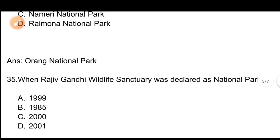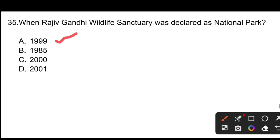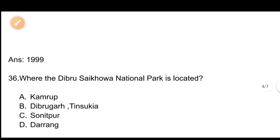Question number 35: When was Rajiv Gandhi Wildlife Sanctuary declared as a National Park? Options: A) 1999, B) 1985, C) 2000, D) 2001. The correct answer is A, 1999. Rajiv Gandhi Wildlife Sanctuary was declared as a National Park in 1999.